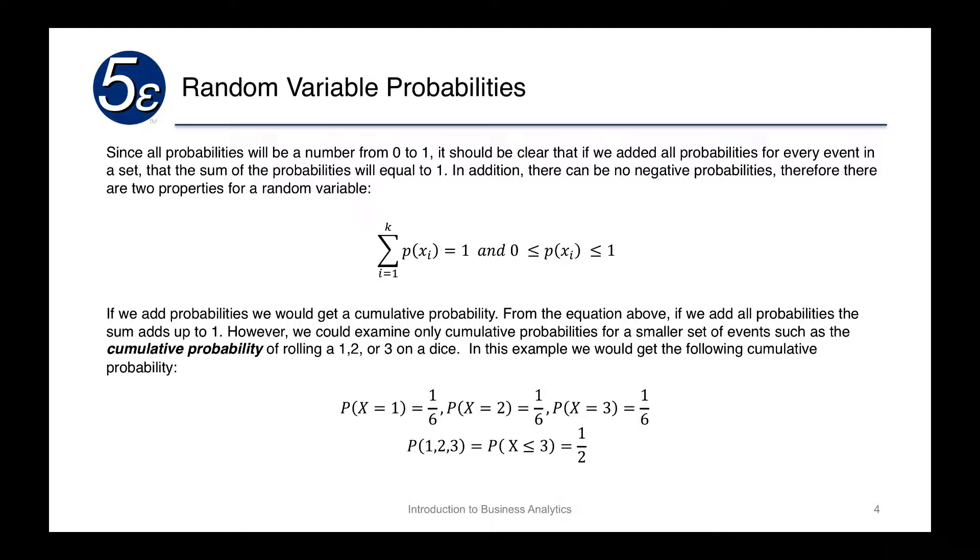Which means that if we're looking for a cumulative probability, we're looking for the probability of 1, 2, or 3, which is equal to the probability of x less than or equal to 3, which would sum up all of the individual probabilities, giving us the cumulative probability of 1 half.